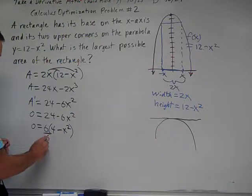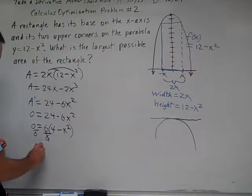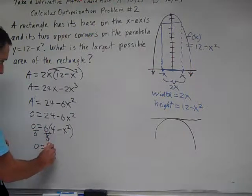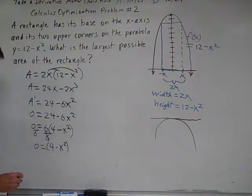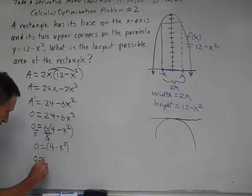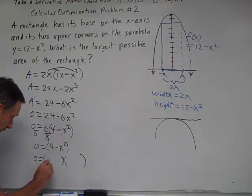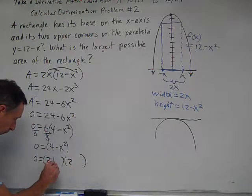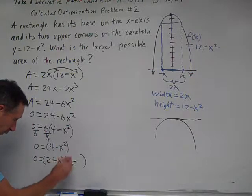So we'll divide both sides of the equation by 6. And so we have 0 is equal to 4 minus x squared. And using the difference of squares factoring method, we'll have 0 is equal to the square root of 4, which is 2, plus, minus, square root of x squared, which is x and x.